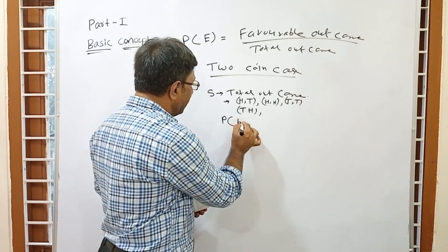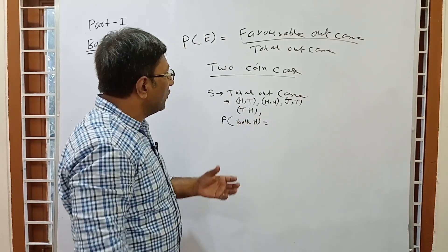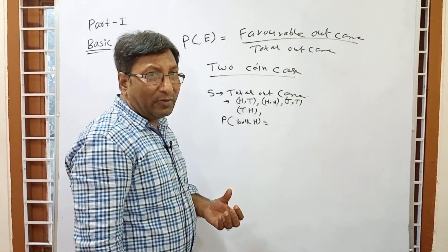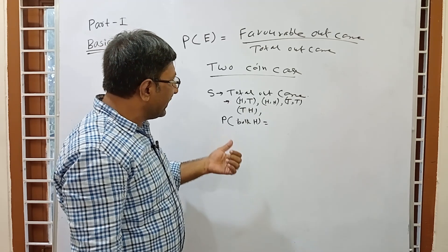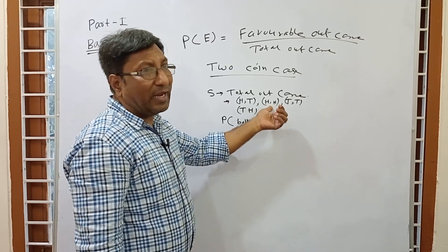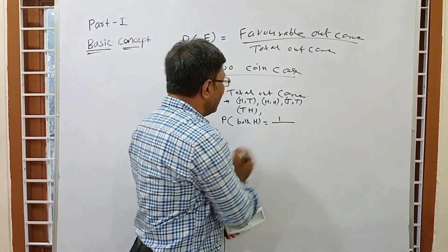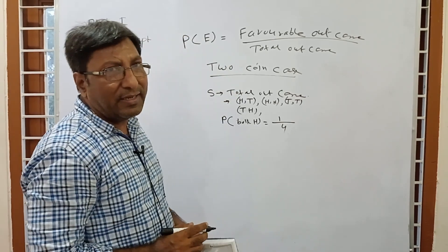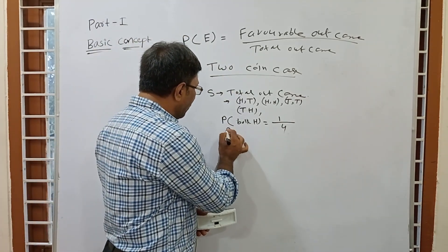What is the probability of both coins showing head? Checking our outcomes, there is only one outcome which has both heads (HH). So favorable outcome is 1 and total outcome is 4. The correct answer is 1/4.